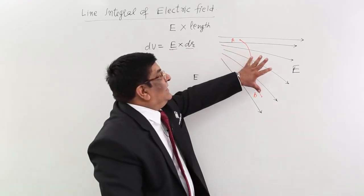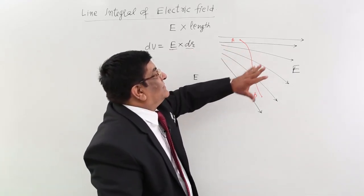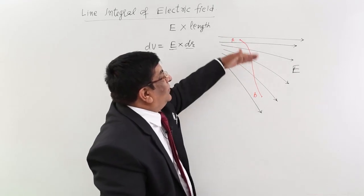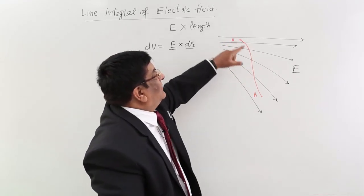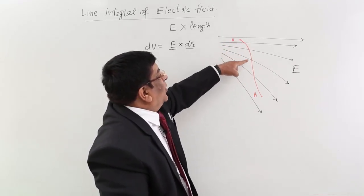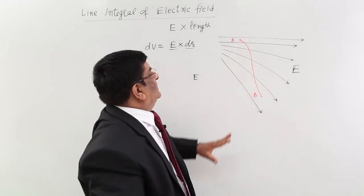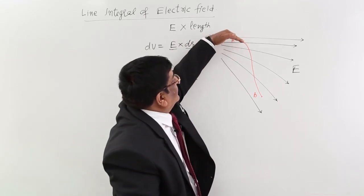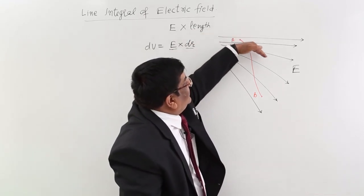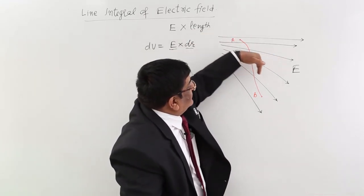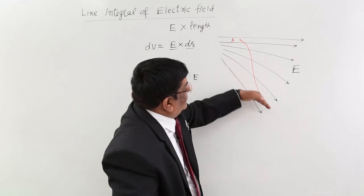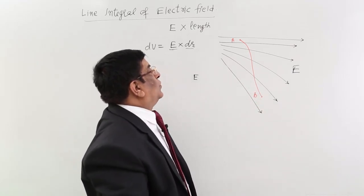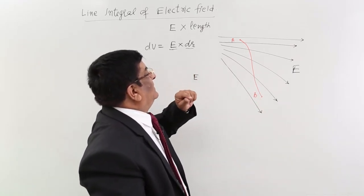This is a non-uniform electric field — at every point it is changing. And this length is not in one direction; sometimes it goes this way, sometimes another way. So how do we find it?